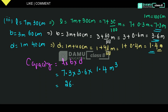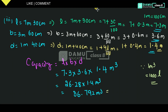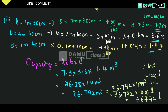Capacity = 7.3 × 3.6 × 1.4. First, 7.3 × 3.6 = 26.28, then 26.28 × 1.4 = 36.792 cubic meters. Since 1 cubic meter equals 1000 liters, capacity = 36.792 × 1000 = 36792 liters. Thanks for watching, please subscribe.